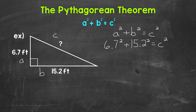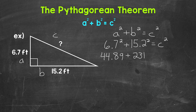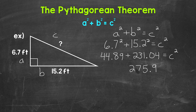Now we just continue to work through that equation until we figure out what c equals. 6 and 7 tenths squared gives us 44 and 89 hundredths, plus 15 and 2 tenths squared gives us 231 and 4 hundredths equals c squared. Now we can add what's on the left side of the equation: 44 and 89 hundredths plus 231 and 4 hundredths gives us 275 and 93 hundredths equals c squared.